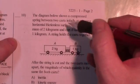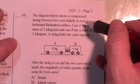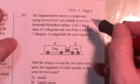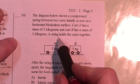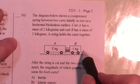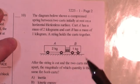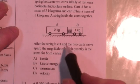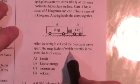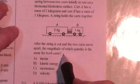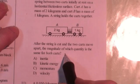The diagram shows two compressed springs between two carts initially at rest on a horizontal frictionless surface. Cart A has got a mass of 2 kilograms. Cart B has a mass of 1 kilogram. The string holds the carts together. After the string is cut, the two carts move apart. The magnitude for which quantity is the same for both carts.